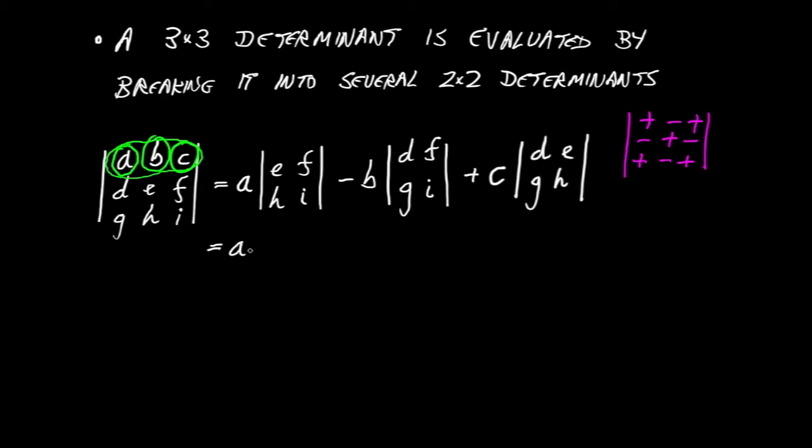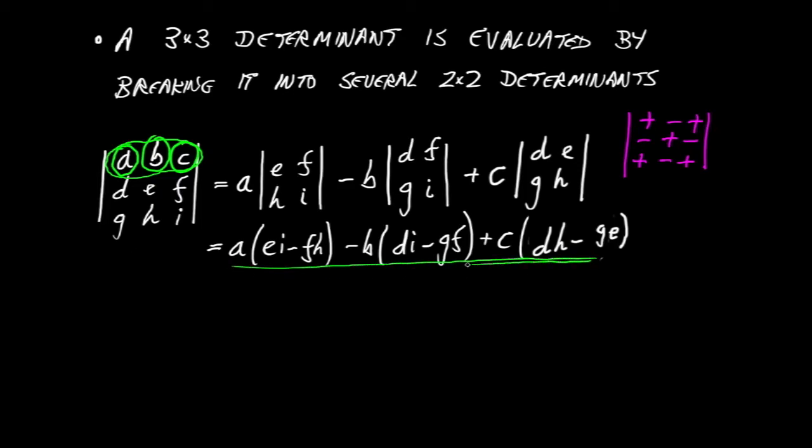Then, of course, those 2x2 determinants I can just write down what they are using my rule of multiplying down the diagonal and subtracting the anti-diagonal. So there we are. That is, in general, what a 3x3 determinant evaluates to.